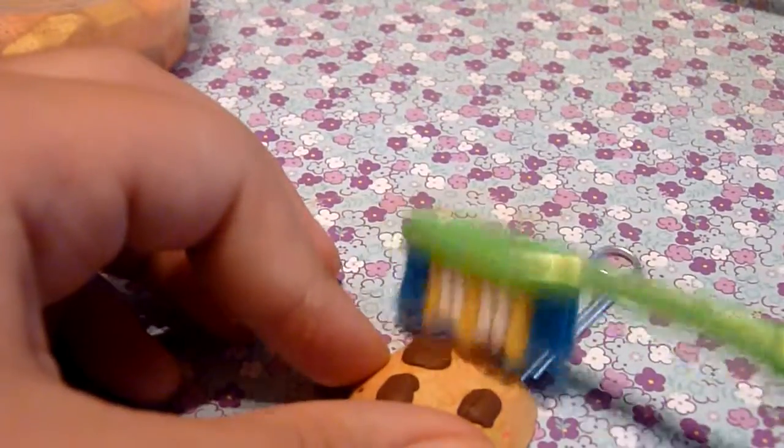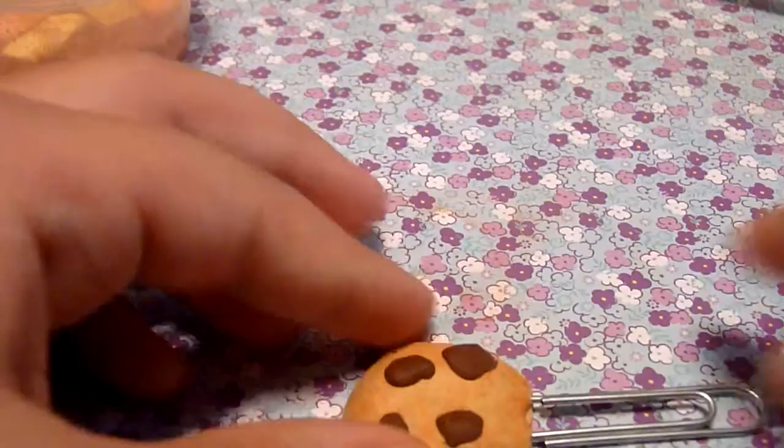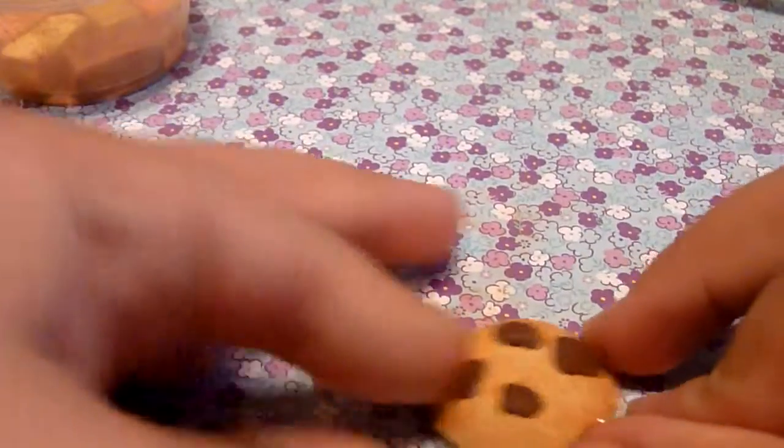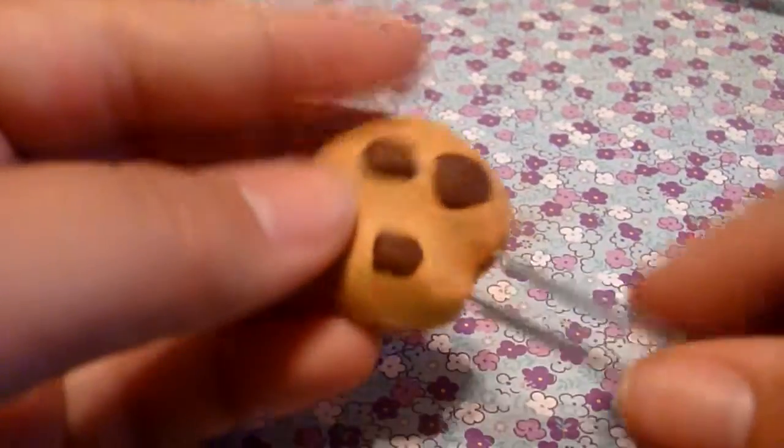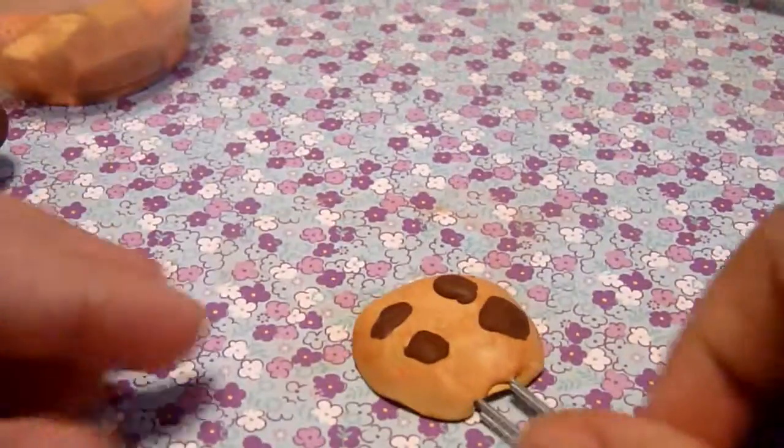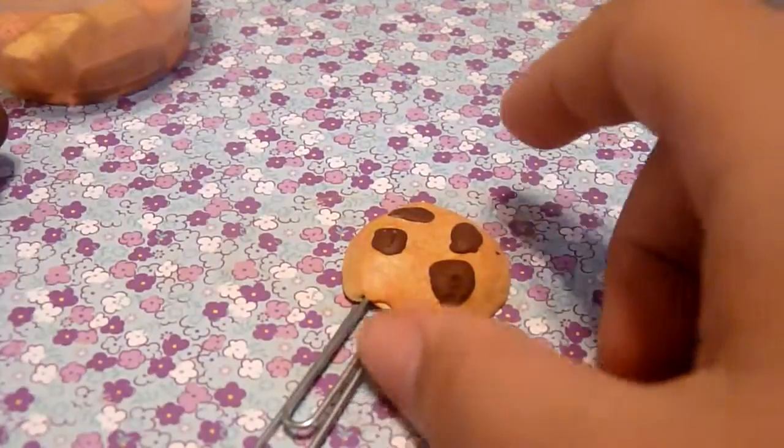And if it ruins the texture, you can texture it again. And then you can just squeeze this so the paper clip can't come out again. And you're done.